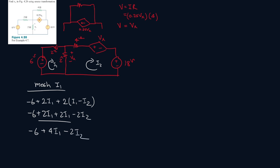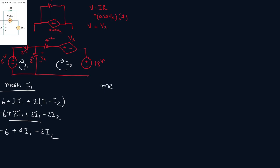Alright, now let's focus on mesh 2. 2 I2 minus I1 plus 4 I2 plus Vx plus 18. So 2 I2 minus 2 I1 plus 4 I2 plus Vx plus 18.